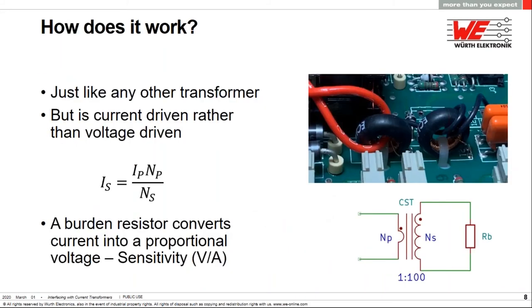So how do they work? Current transformers follow the same laws of physics as voltage transformers, but the difference is that they are current driven rather than voltage driven. This manifests itself in the different elements that cause errors, as we'll see in a moment. Many current transformers do not contain a primary winding, which is usually just a single wire, as you see in this photograph. Here the red wire on the left is a single turn, and the black wire on the right has two turns. The secondary current is proportional to the primary current divided by the turns ratio, just like a voltage transformer. Secondary is then connected to a burden resistor, which is used to convert the current into a proportional voltage. We call this sensitivity, and the units are volts per amp.